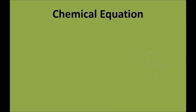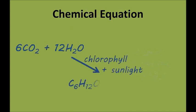A chemical equation is like a word equation, except that instead of using words, we actually write the chemical symbols for the substances that we're looking at. This is the chemical equation for photosynthesis.